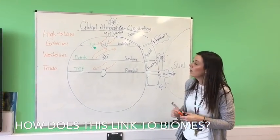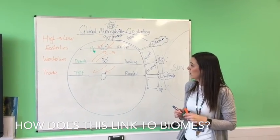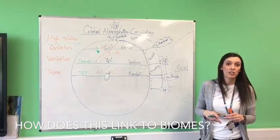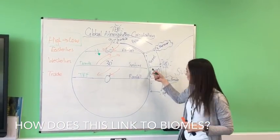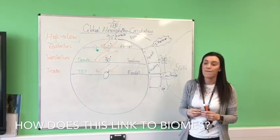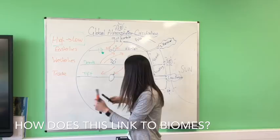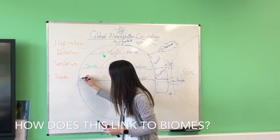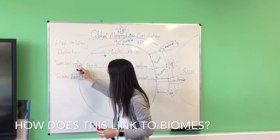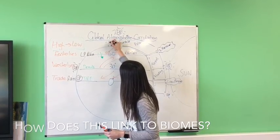Why does the arrow go upward from 30 degrees to 60 degrees, when the other arrows come down? Because winds blow from high to low. High pressure is at 30 degrees and low pressure is at 60 - so winds blow upward from high to low. To summarize: low pressure gives rainfall at zero degrees, high pressure gives clear skies at 30, low pressure gives rainfall at 60, and high pressure gives sunshine at 90.